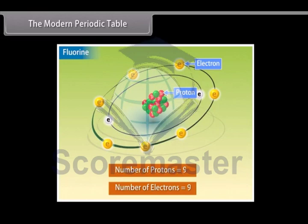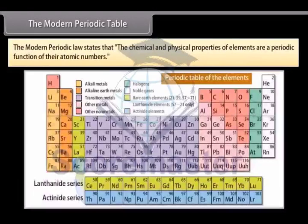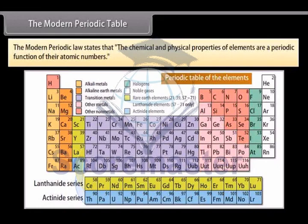This led to a change in the Periodic Law. The Modern Periodic Law states that the chemical and physical properties of elements are a periodic function of their atomic numbers.